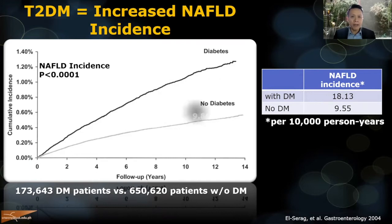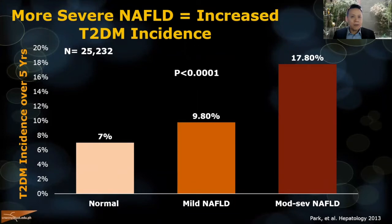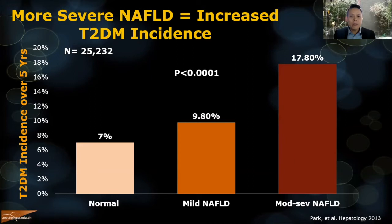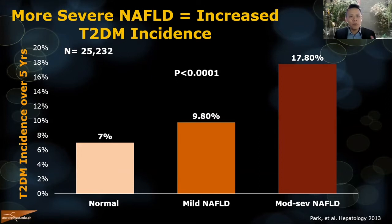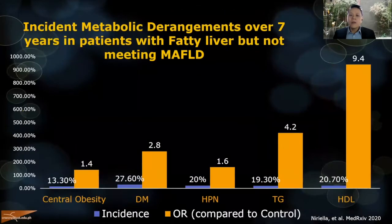It can also go the other way around. A patient with fatty liver without metabolic derangements can later develop diabetes. The more severe the fatty liver seen on ultrasound, the greater the chance the patient will develop diabetes — in this study, over five years compared to controls. So it can happen both ways: diabetes increases incidence of fatty liver, and fatty liver increases incidence of developing diabetes.